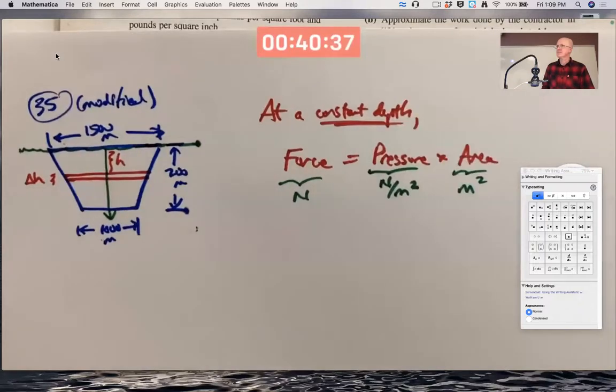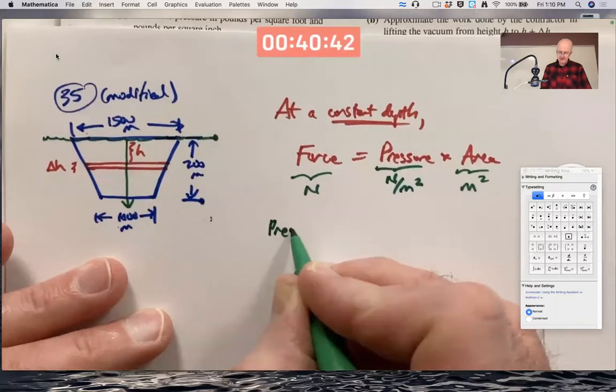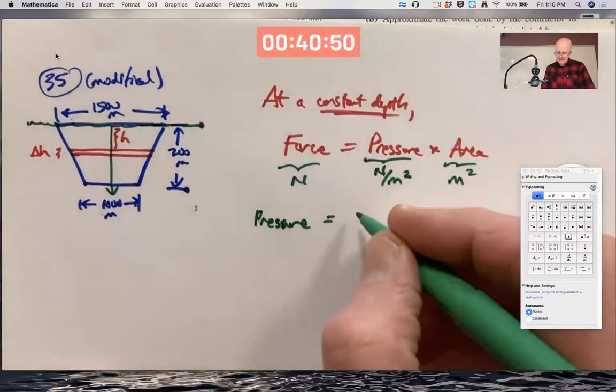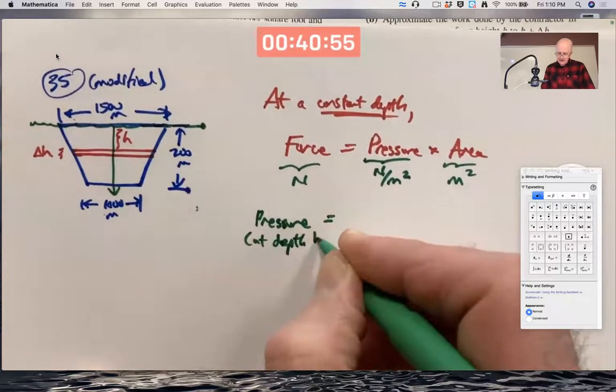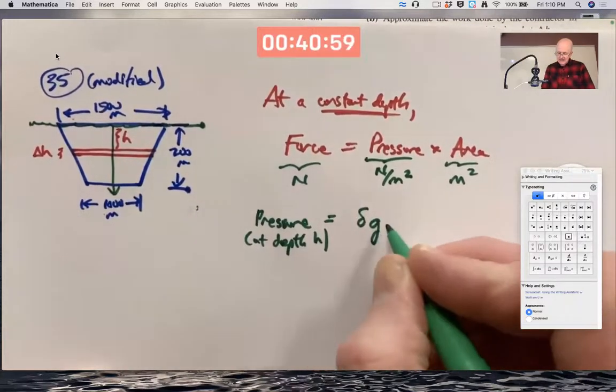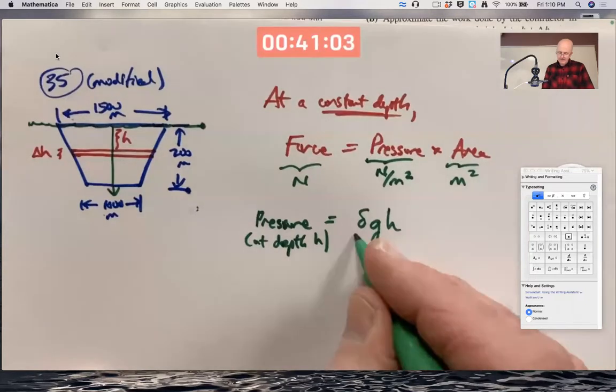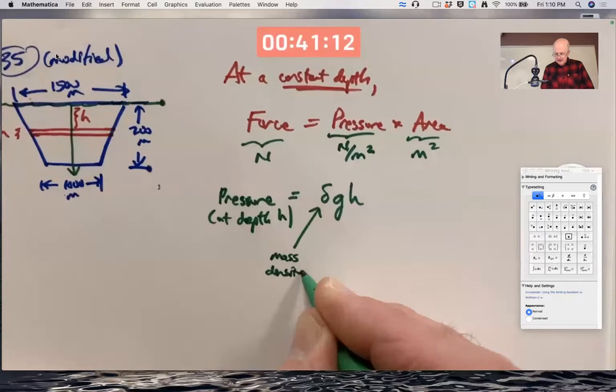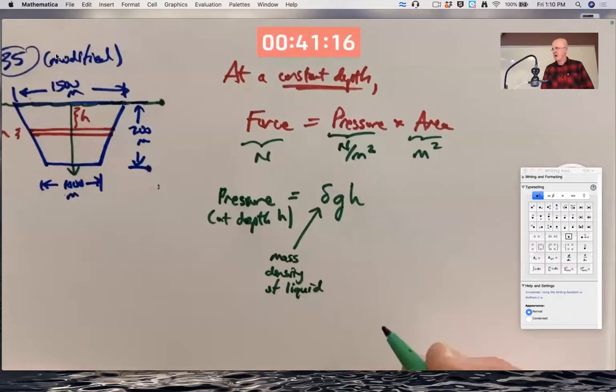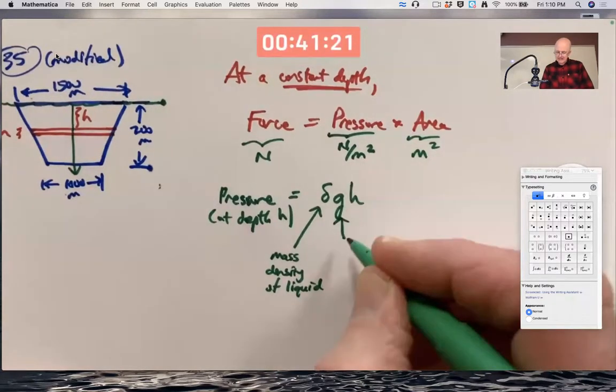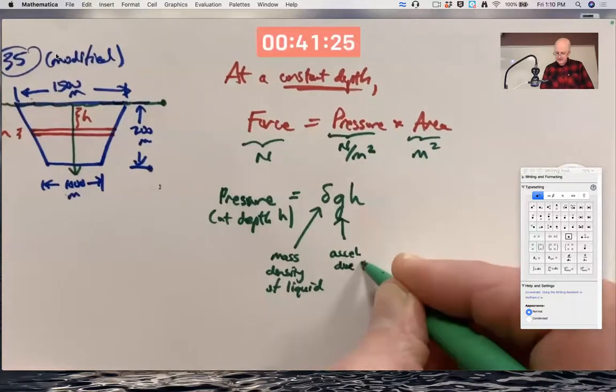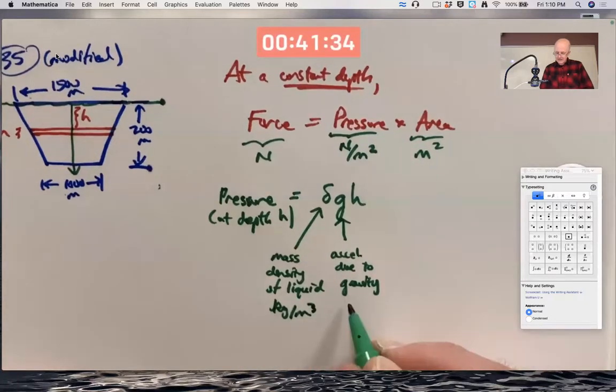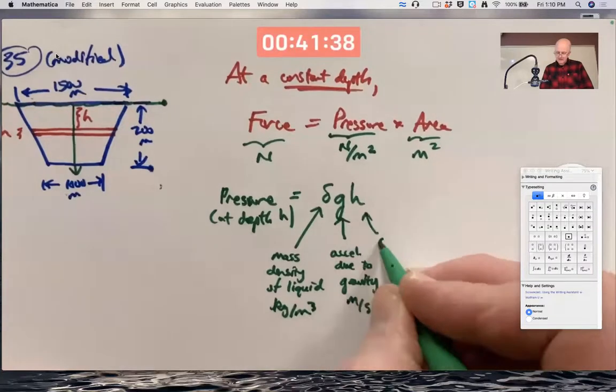And how do you figure out the pressure at a given depth? In general, you write this as delta times g times h, where delta is the mass density of the liquid, which for most of your problems is water but it could be something else. g, as usual, is the acceleration due to gravity. Mass density is in kilograms per cubic meter. Acceleration due to gravity is in meters per second squared. And there's your depth in meters.